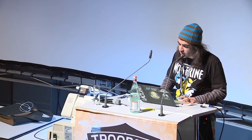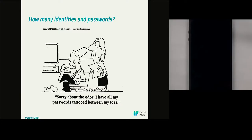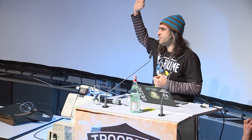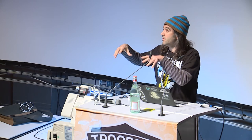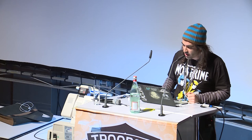If we think about that on the internet, we got a lot of problems, because probably most of you are unable to recall how many identities you have on the internet since you first connected to the network. How many of you are able to say, okay, I've got 37 identities on the internet? No one. Incredible. And we are at a security conference of hackers, technical people, and even us are unable to say how many digital identities we have on the internet. This is a very big problem.